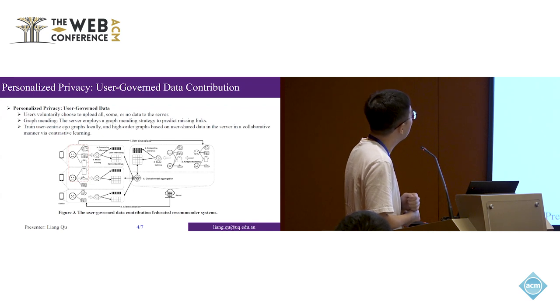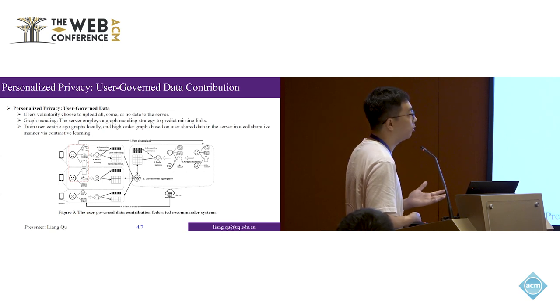I'll show you this figure—this is the architecture of our work. For example, the first user is not concerned about privacy, so he uploads all of his data to the central server. The second user only cares about part of his privacy, so he uploads part of his data. The last user cares about privacy, so he doesn't upload any data to the server. This is aligned with traditional federated recommendation settings.